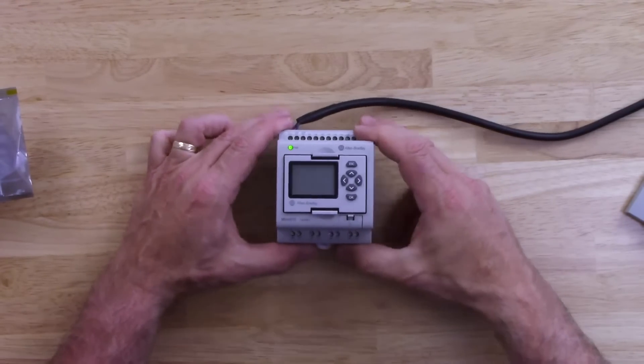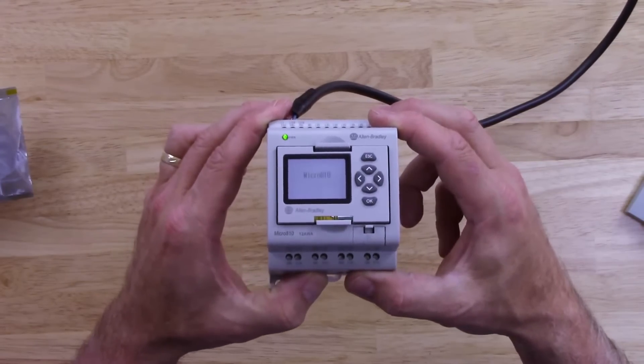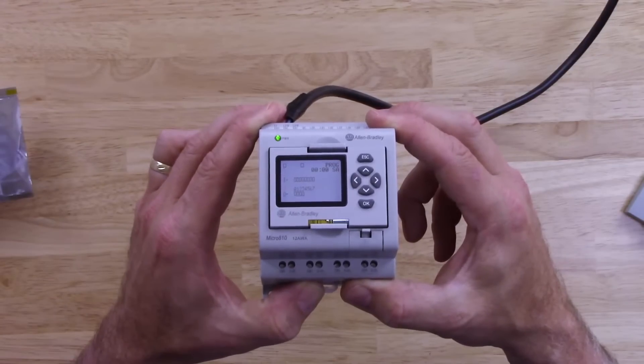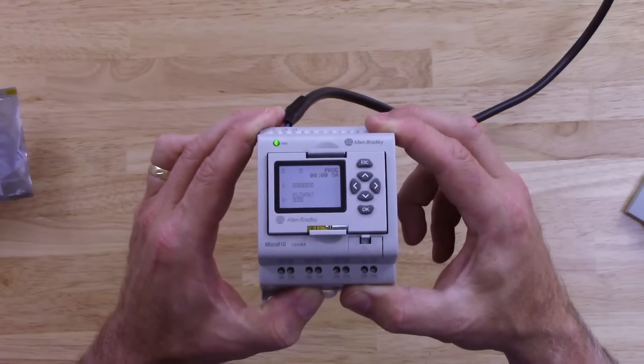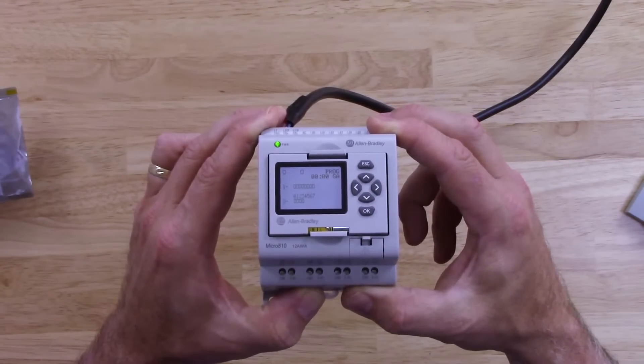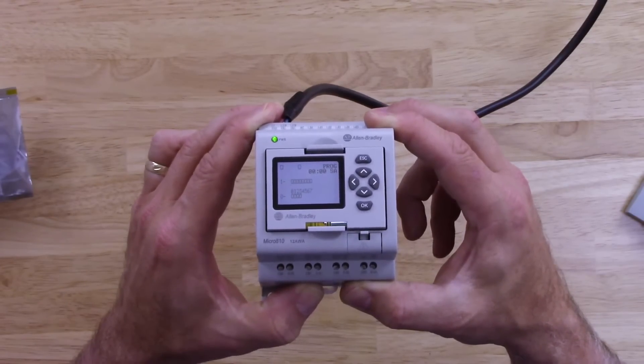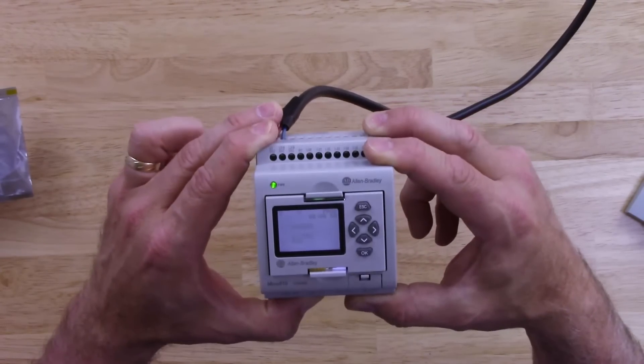And let's see what we get here. Okay, a little splash screen with the Micro-810. And now I have I.O. status. I can see it's in the program mode. And I have nothing wired in, so I have no inputs. And, well, that's it. That's it for today's show.